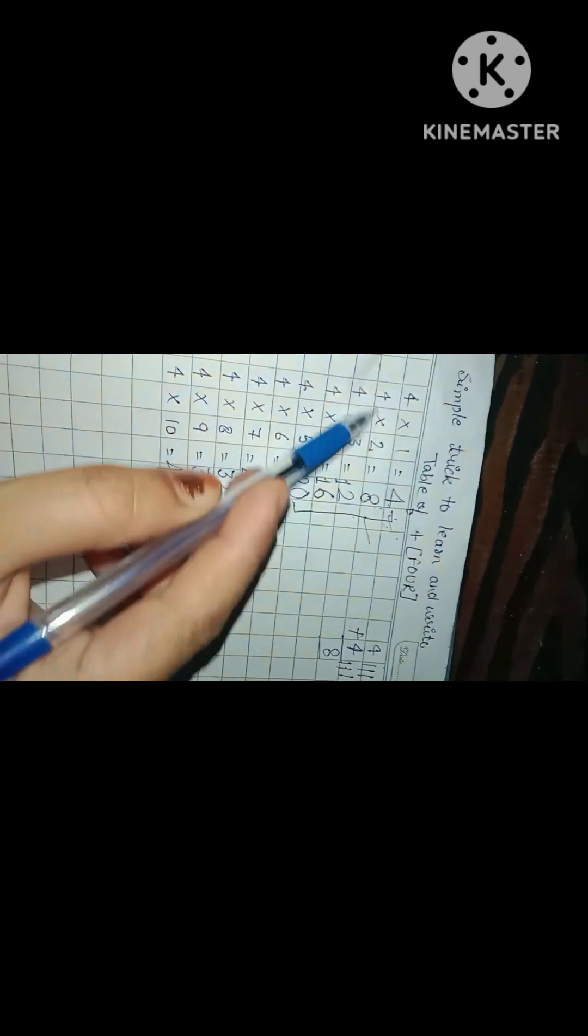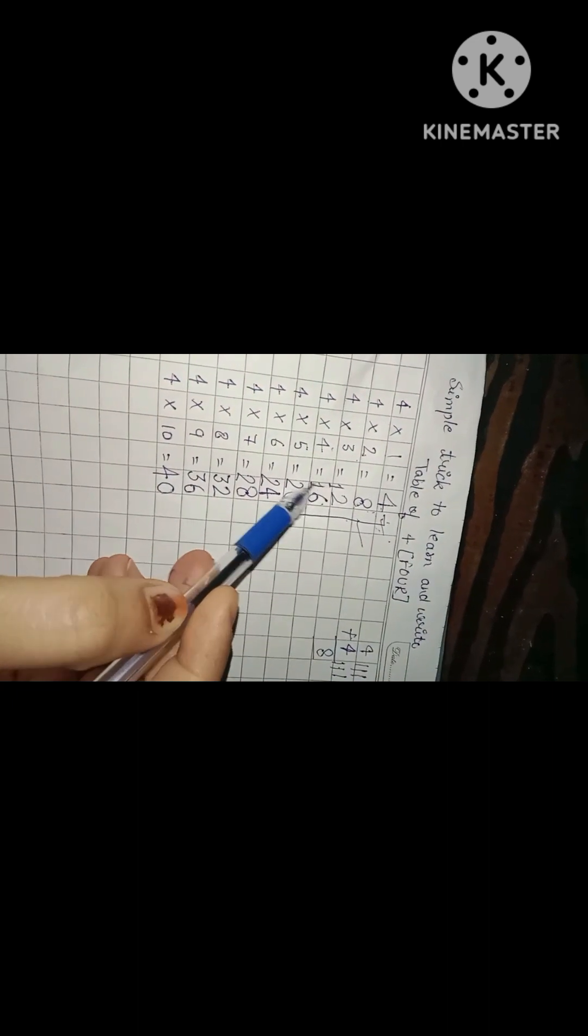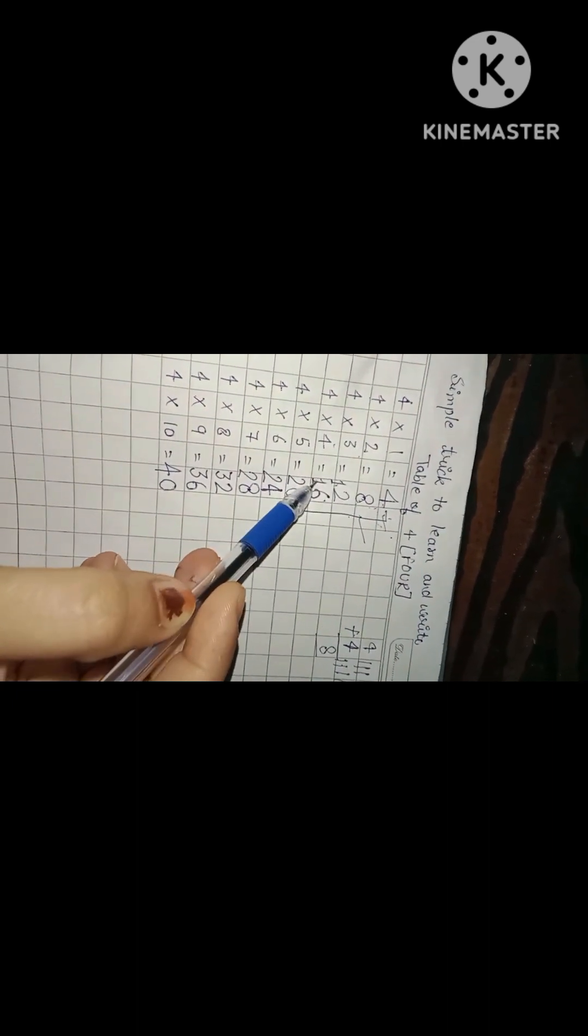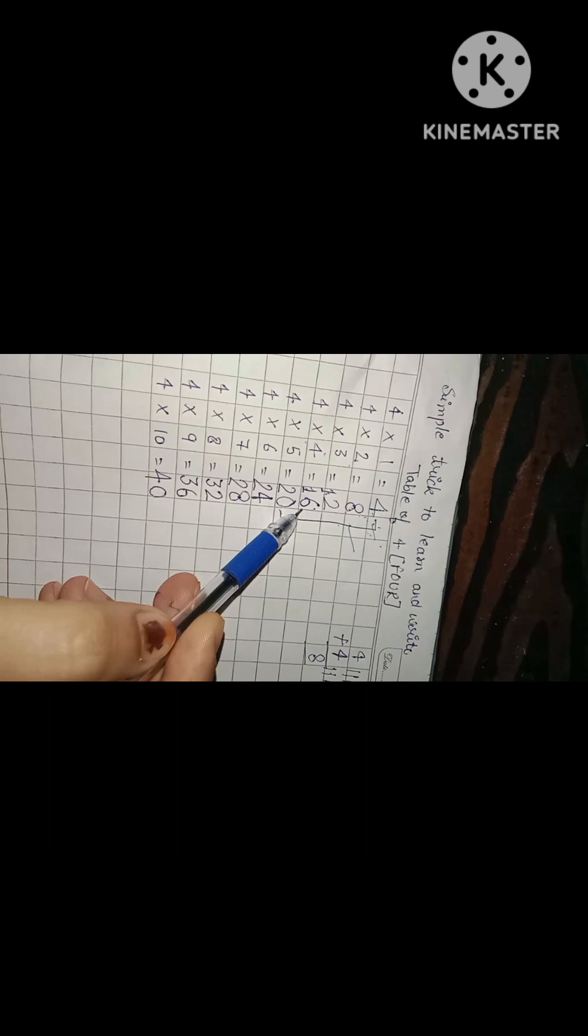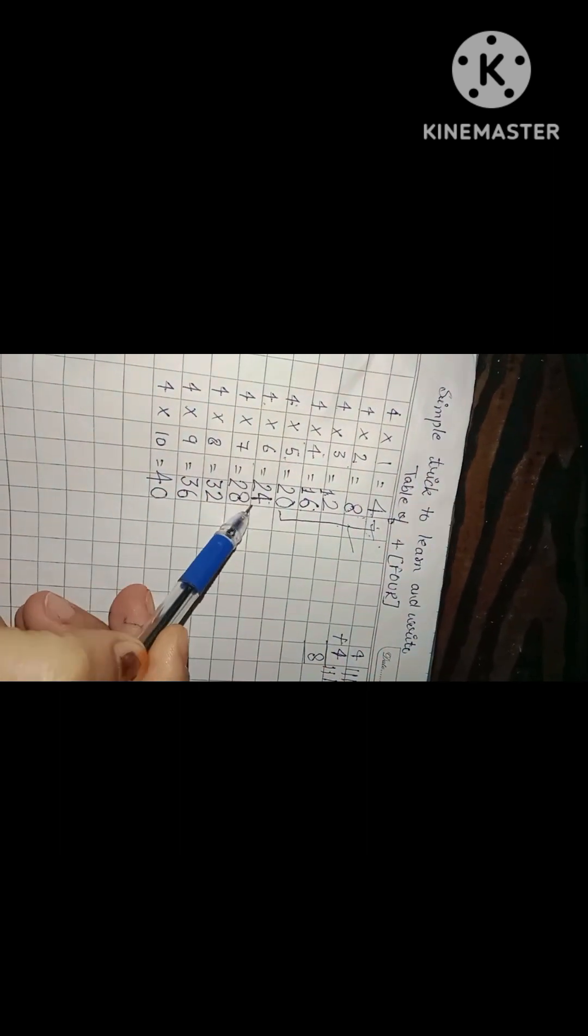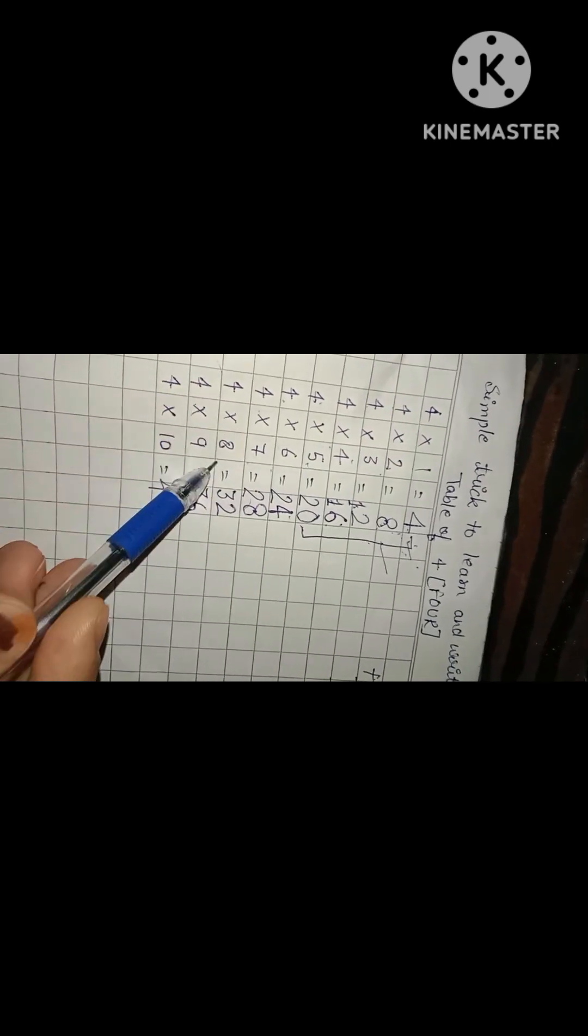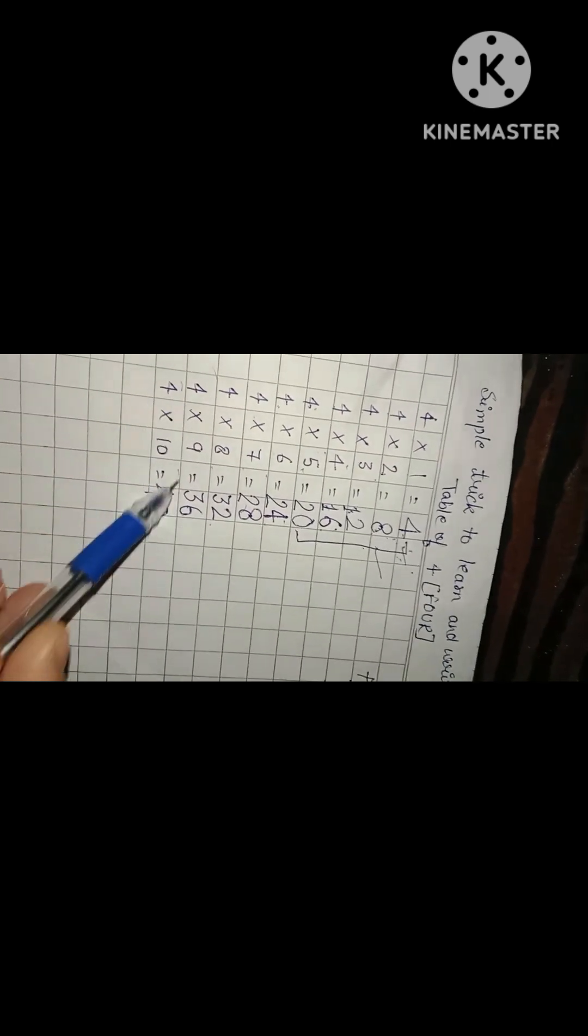4 times 1 is 4, 4 times 2 is 8, 4 times 3 is 12, 4 times 4 is 16, 4 times 5 is 20, 4 times 6 is 24, 4 times 7 is 28, 4 times 8 is 32, 4 times 9 is 36, 4 times 10 is 40.